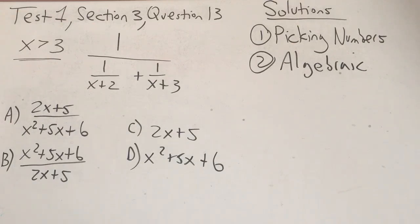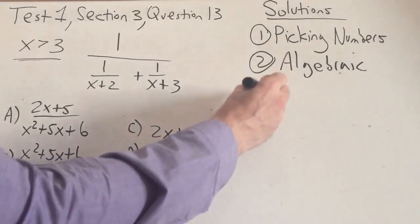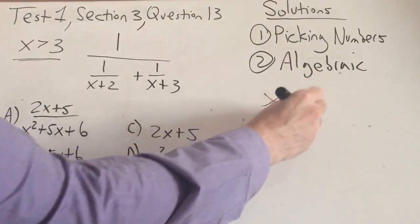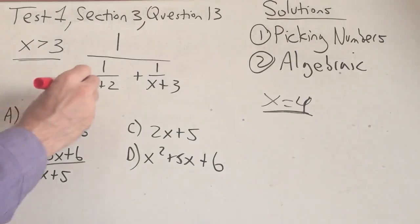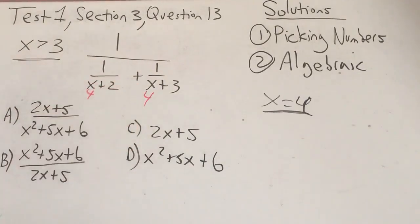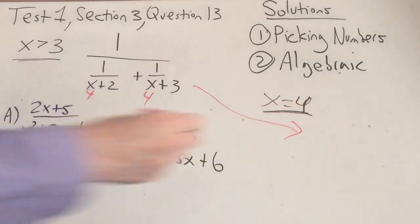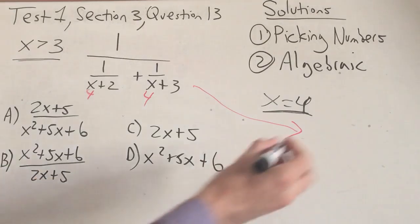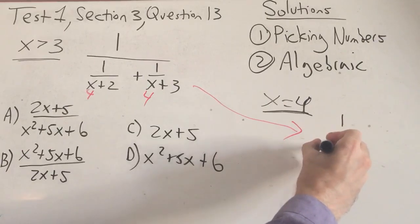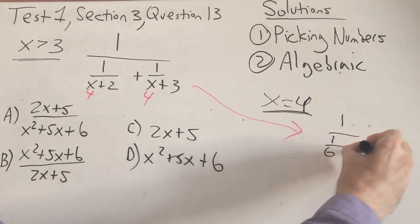So I'm going to do this first by picking a number. Since x is greater than 3, the simplest choice we could pick is x equals 4. So let's let x equal 4. I'm going to replace x by a 4 in the original expression. So wherever I see an x, I'll put a 4. Let me rewrite this expression with the 4 plugged in. So we have 1 over (1/6 + 1/7).